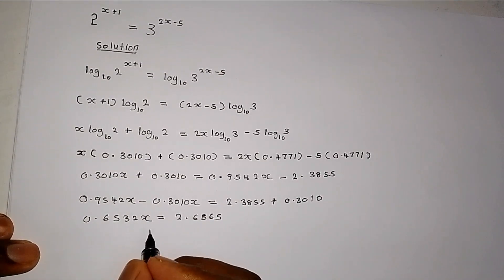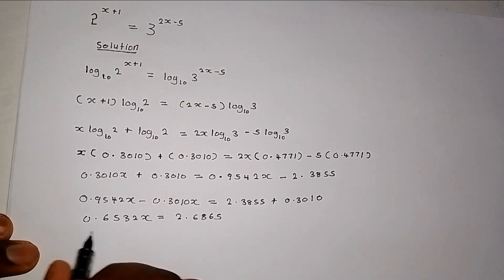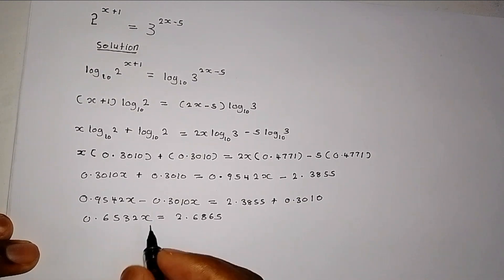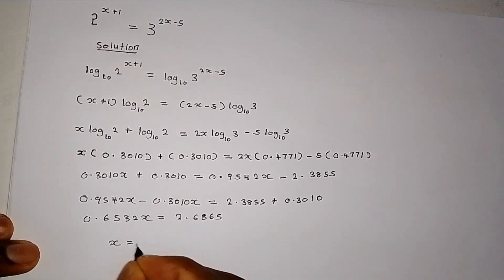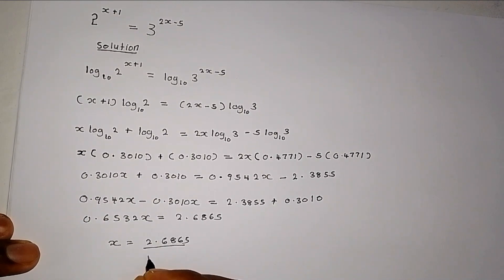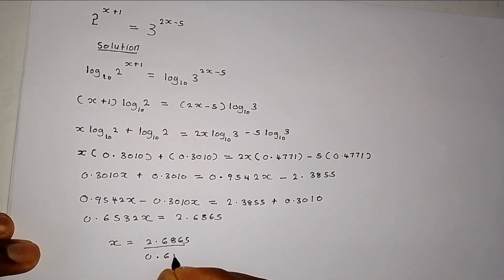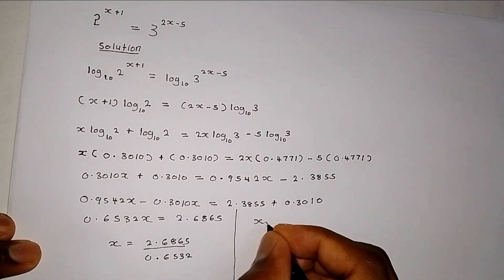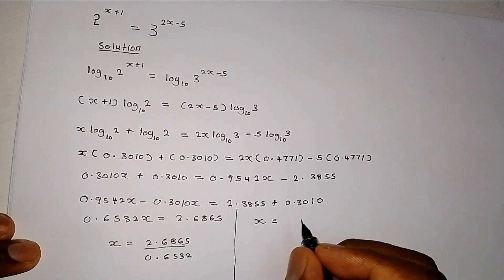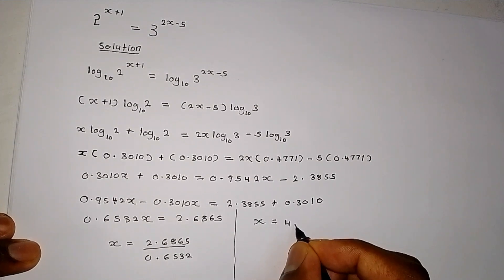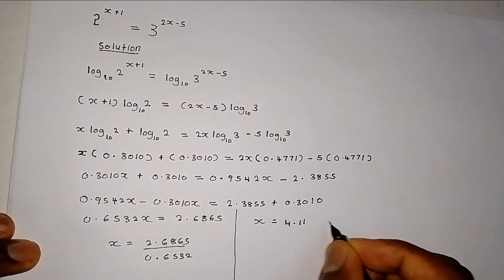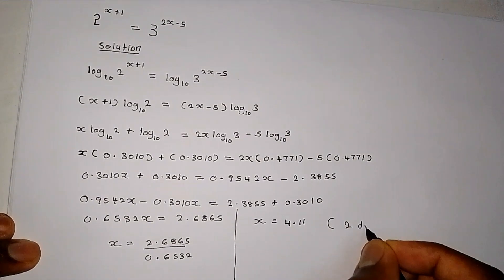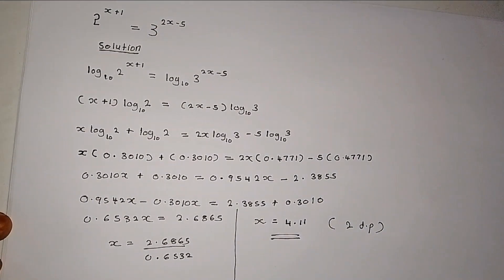Now, what will be the value of x? For us to get the value of x, you have to divide both sides by 0.6532. Now, x becomes 2.6865 divided by 0.6532. After working out, we will realize that the value of x becomes 4.11. This is correct to two decimal places. Thanks for watching.